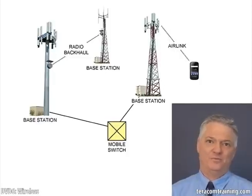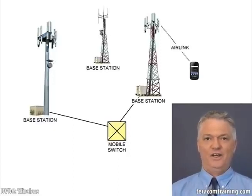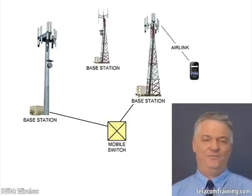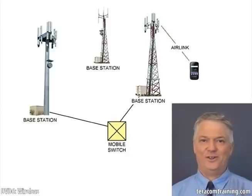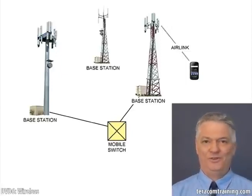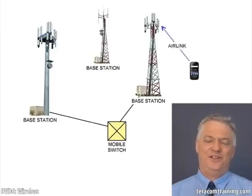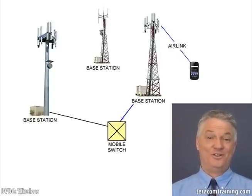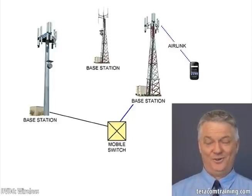The mobile switch is responsible for keeping track of who's where, amongst many other things. The phone learns which base station it's talking to and stores that as the Location Area Identifier on the SIM card. When you first turn your phone on, it's been programmed to communicate at particular radio frequencies. It will transmit on those frequencies its International Mobile Subscriber Identity and other information, which is received by the mobile switch. The switch looks up whether that customer is theirs and authenticates using the encryption technology.